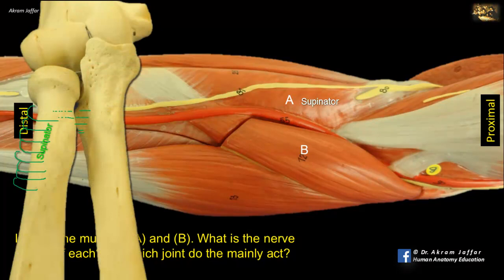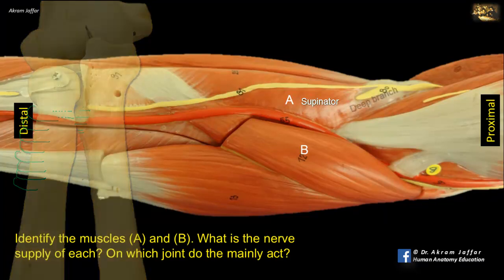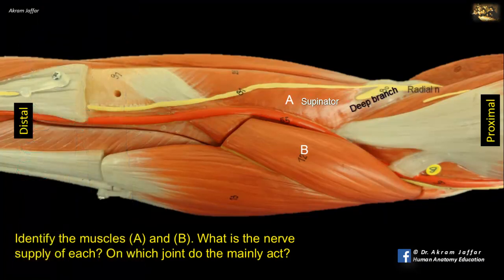Note that the supinator wraps around the radius above the anterior oblique line, and it is attached to the upper third of the radius. Also note that the deep branch of the radial nerve passes between the two heads of origin of this muscle, the supinator muscle, and while doing so, the deep branch of the radial nerve supplies the muscle.